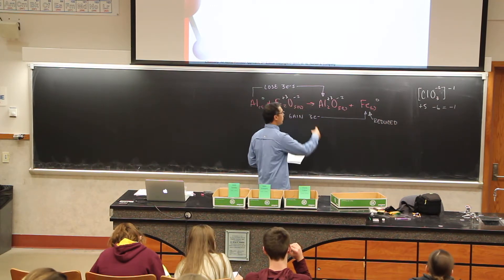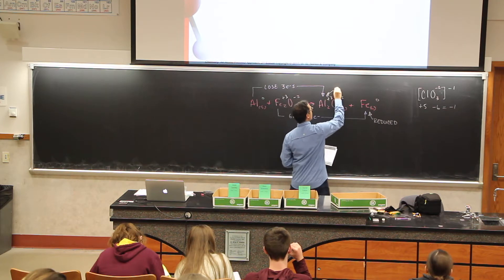Our aluminum over here, it's going to lose three electrons because it goes from a zero to a plus three. So the iron we saw that its charge went down. If its charge went down we would say it's been reduced.